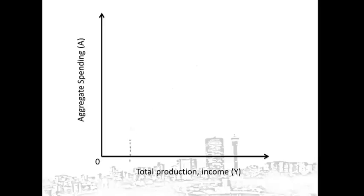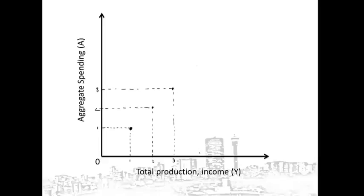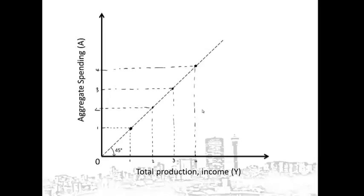Let's mark all the places where aggregate spending is equal to total production or income. If total production or income is 1, it will be equal to aggregate spending at 1. If total production is equal to 2, then aggregate spending also has to be equal to 2. If total production is equal to 3, then aggregate spending also has to be equal to 3 in order to be in equilibrium. If total production is equal to 4, then aggregate spending also has to be equal to 4. Now we can just connect the dots.